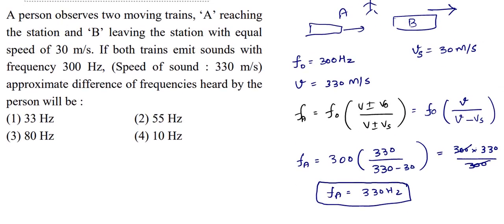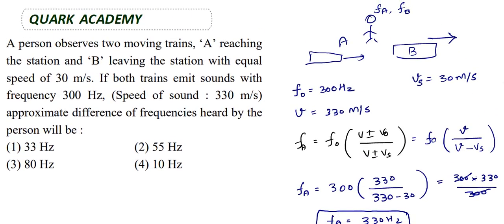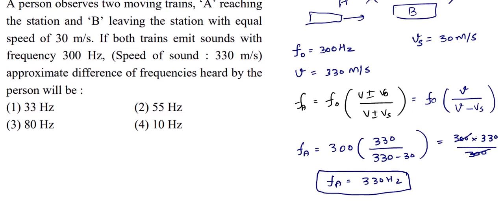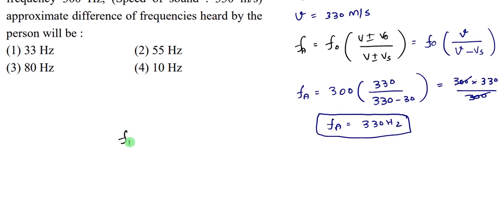Now for train B. Train B is moving away from the observer. That means frequency decreases. The sign changes, that means plus Vs. The observer is stationary, so the frequency decreases. The denominator gets the plus Vs value.